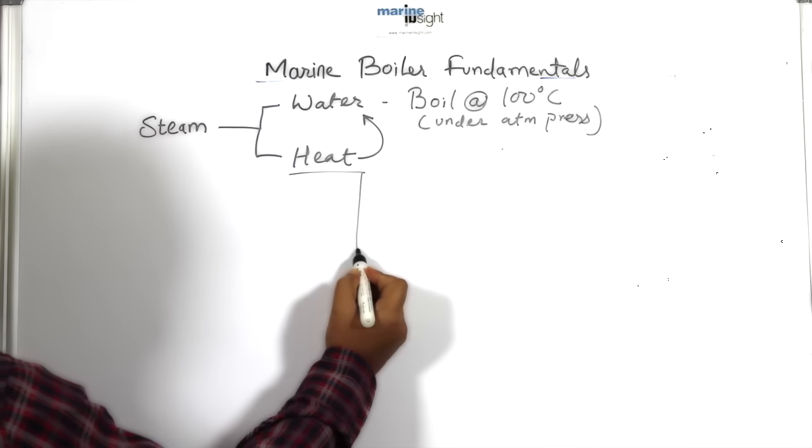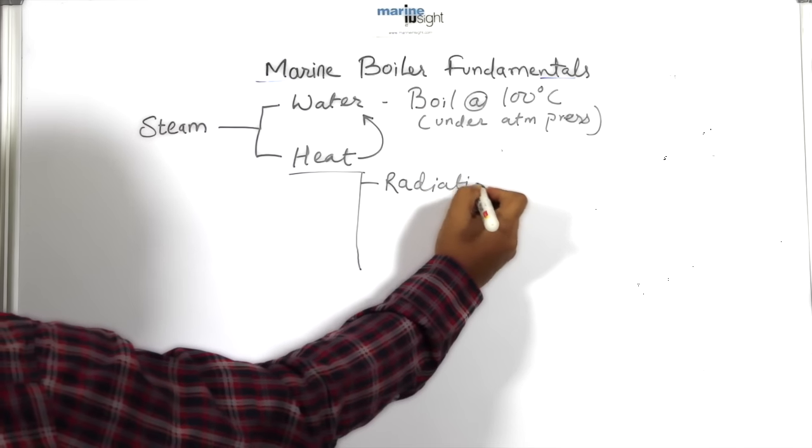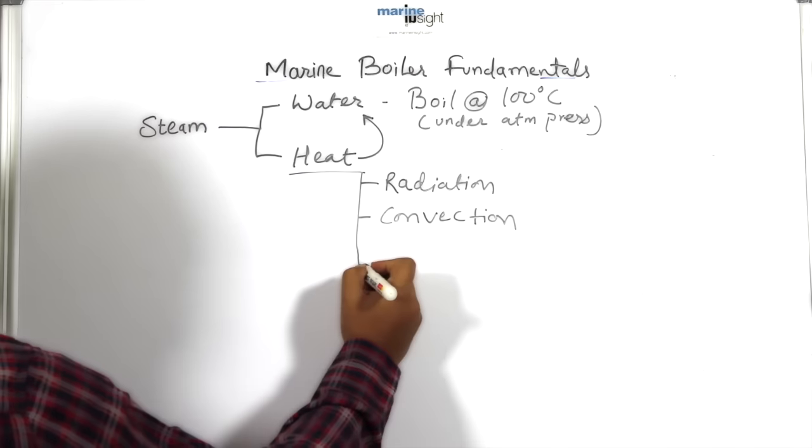The fire generated in the boiler heats the boiler water in three ways or methods: radiation, convection, and conduction.